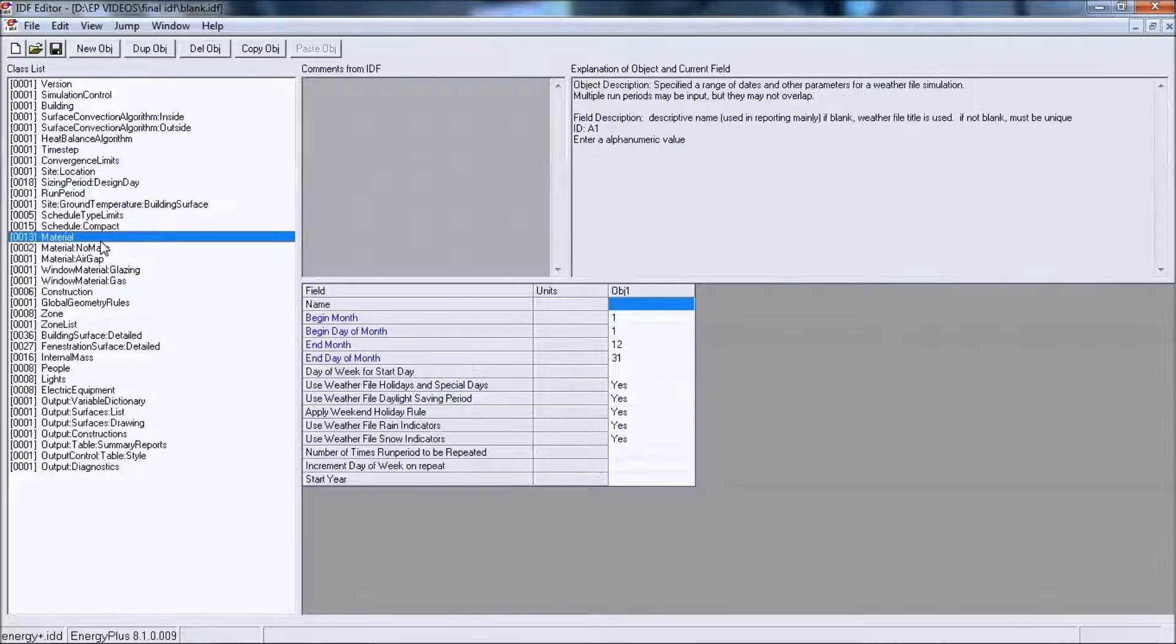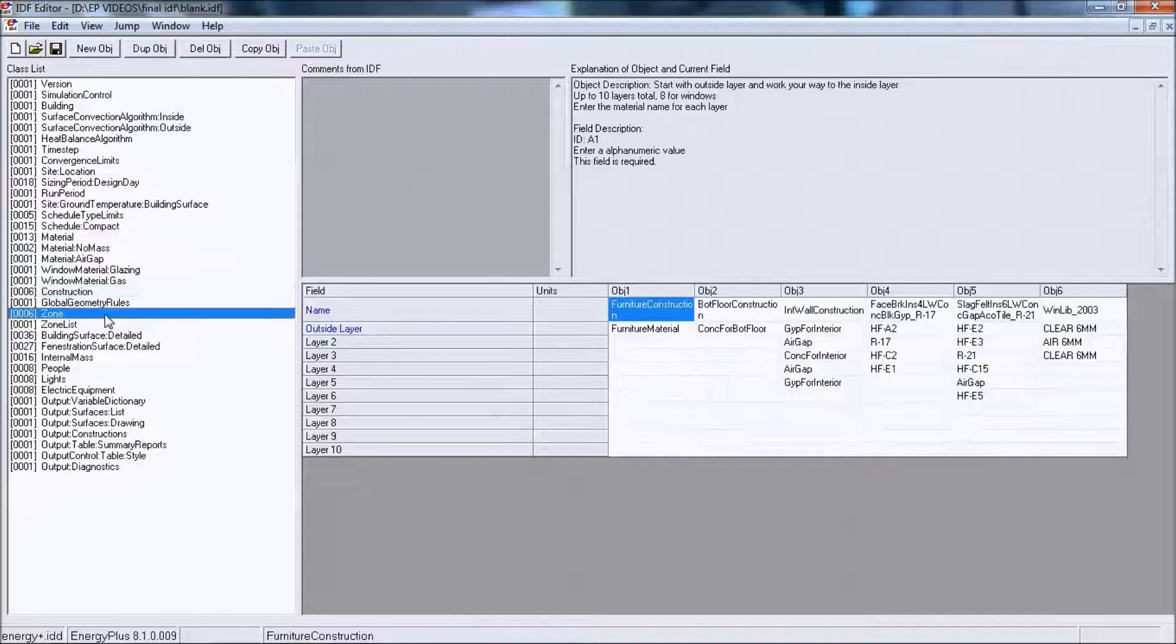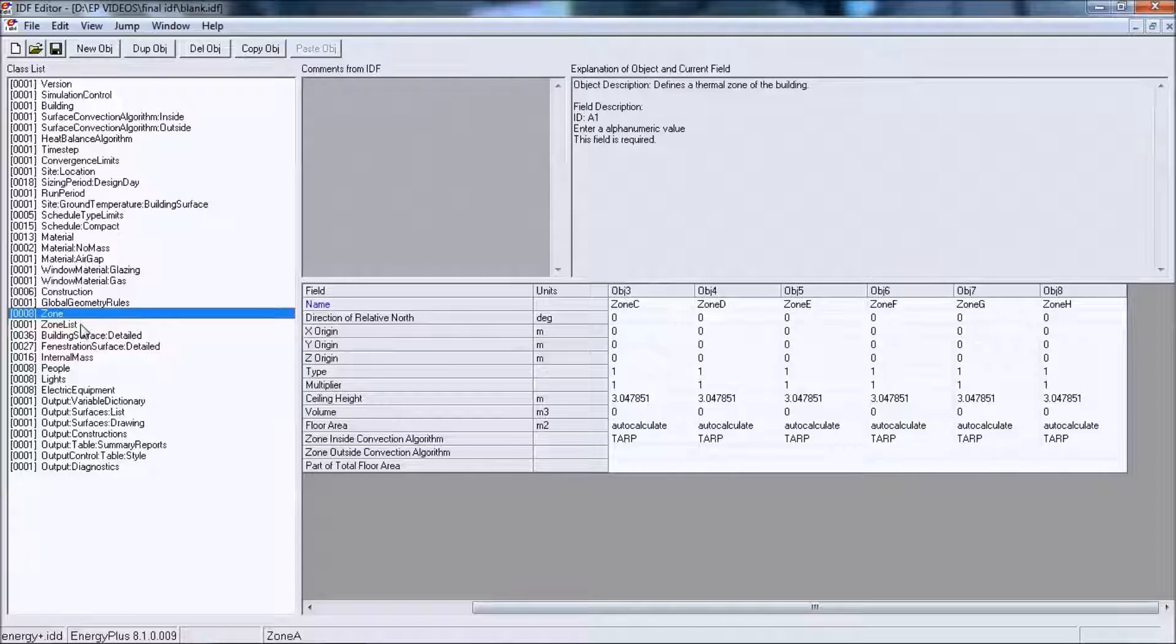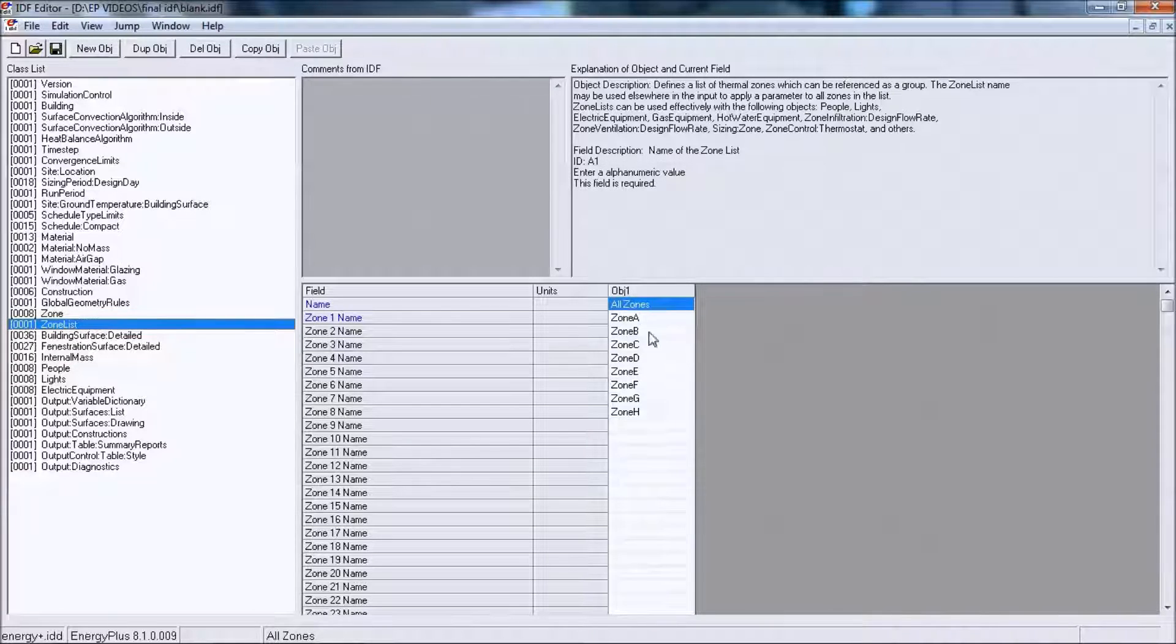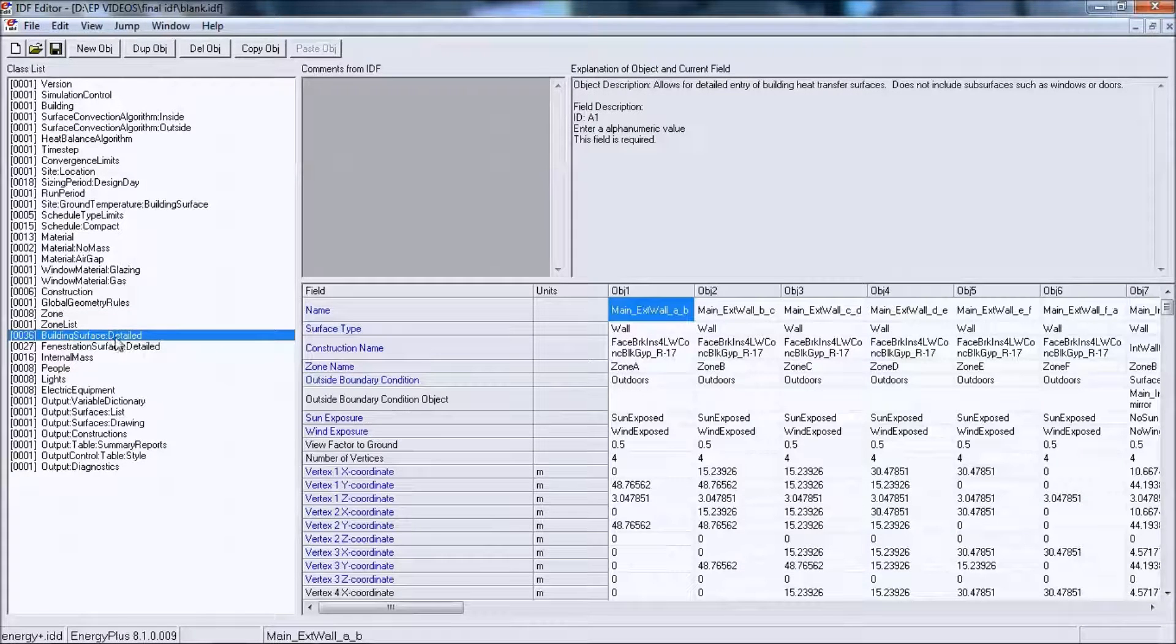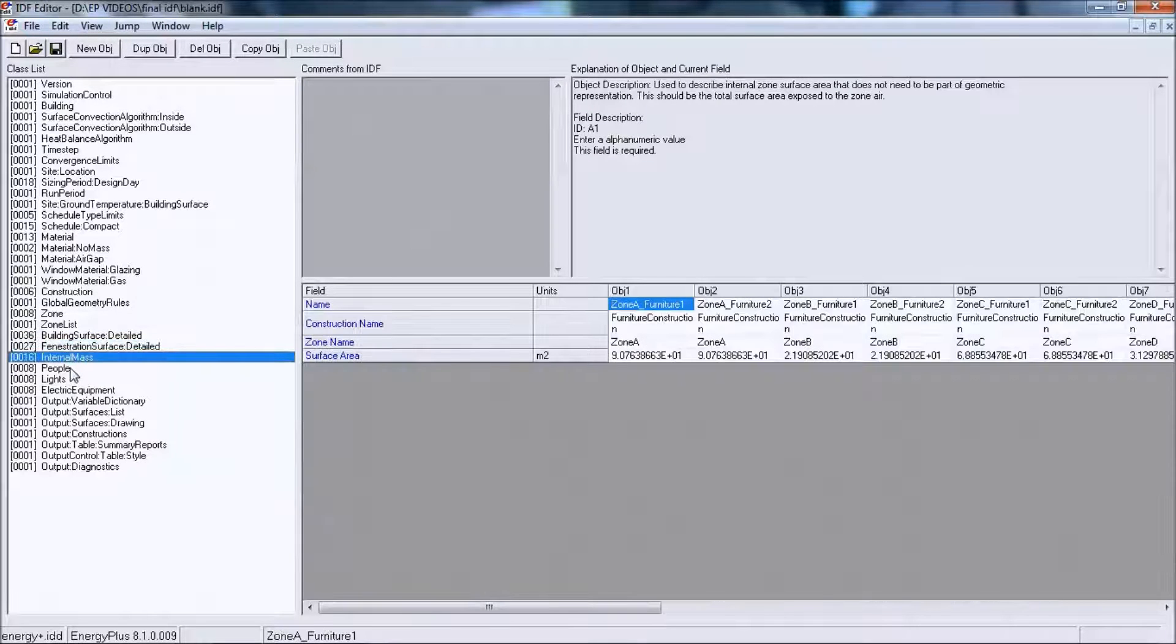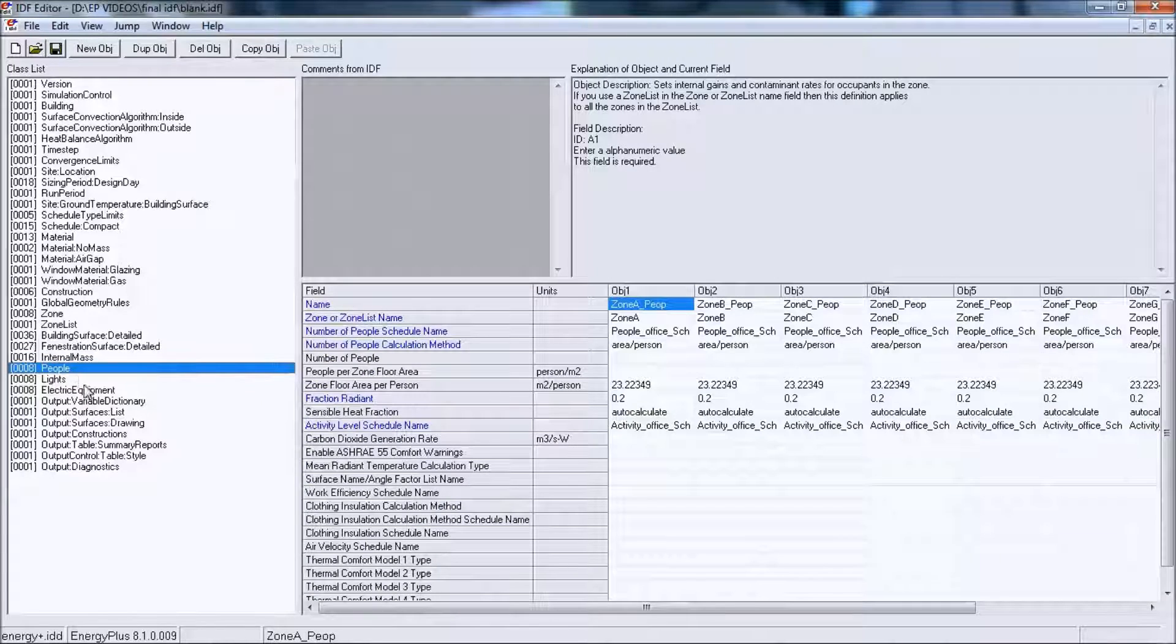The materials and construction are all same. I renamed these zones - these are simple zone A, zone B to zone H. I made a zone list of all these zones. This will be useful in using sizing. I also kept these building surfaces, fenestration surfaces, and all the internal loads - people, lights, electric equipment - all the same.